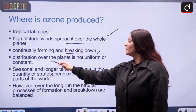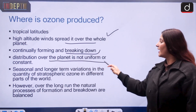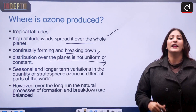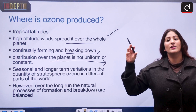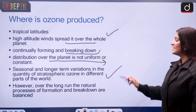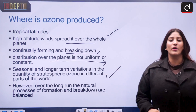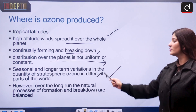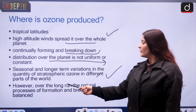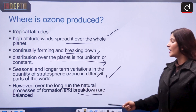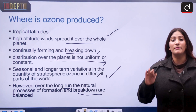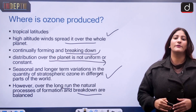The distribution of ozone across the planet is not uniform or constant — it may occur in higher concentrations in certain regions compared to others. Seasonal and longer-term variation in the quantity of stratospheric ozone differs across the world. Over the long run, the natural process of formation is less than the rate of breakdown, which is why we see the ozone layer depleting.